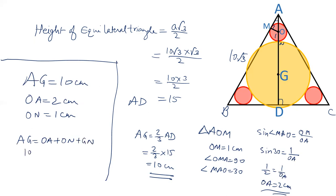AG is 10, OA is 2, ON is 1. We have to calculate GN. 2 plus 1 is 3, 10 minus 3 is 7. So the length of GN is 7 centimeter.